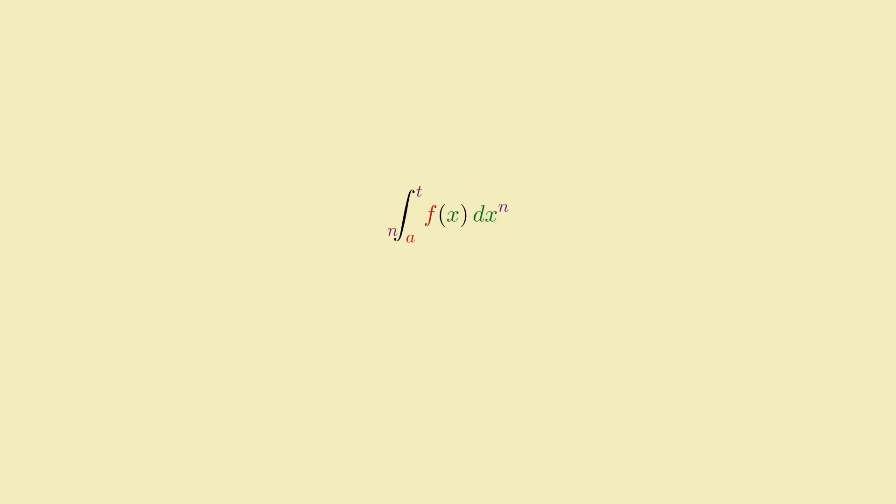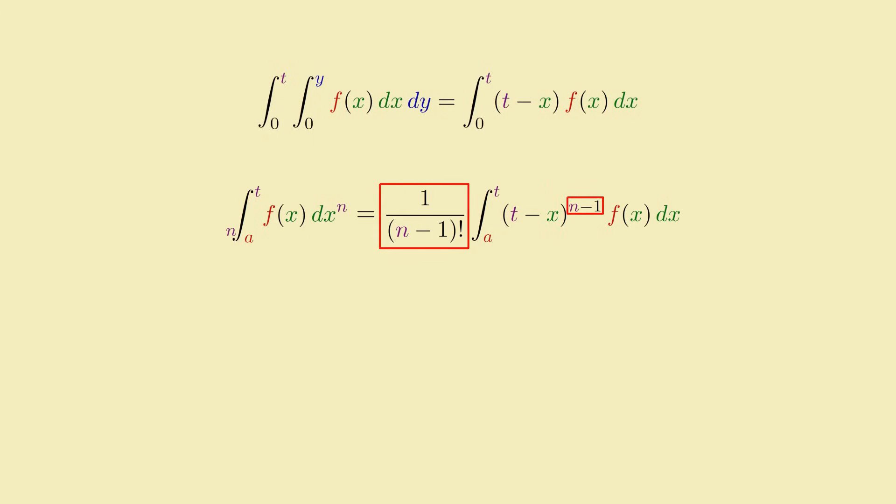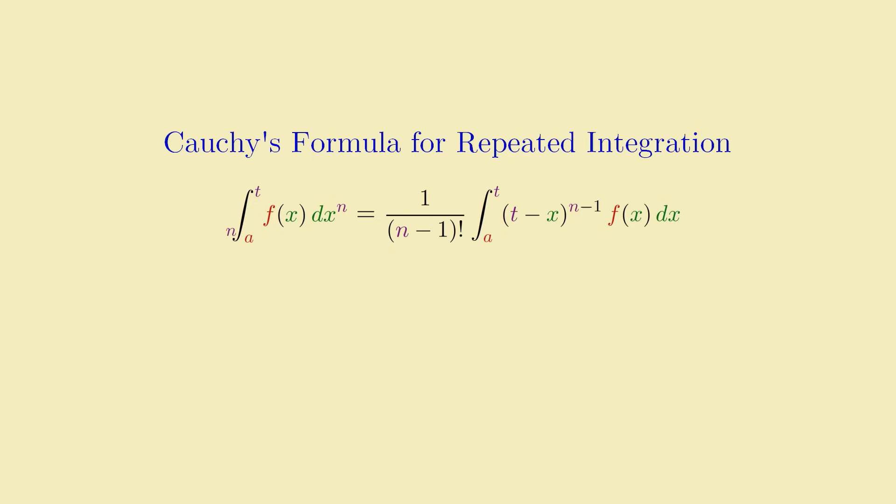As it turns out, n repeated definite integrals of f of x can be rewritten as the following single integral expression. It's pretty similar to the two-integral case, except the (t minus x) factor is raised to the (n minus 1) power, and we also divide the whole thing by (n minus 1) factorial. This more general formula is known as Cauchy's formula for repeated integration, though not to be confused with Cauchy's integral formula, which is a totally different beast.